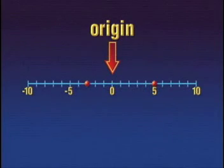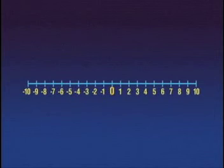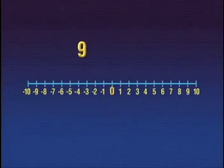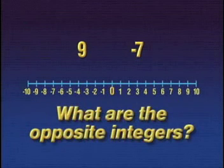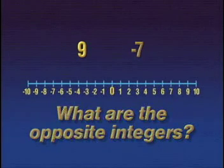Let's take a couple of minutes and try the following example. Draw a number line from negative ten to ten. Graph the integers nine and negative seven. Then graph the numbers you think might be their opposite integers. Teachers, this might be a good time to pause the tape so that students can give this a try.